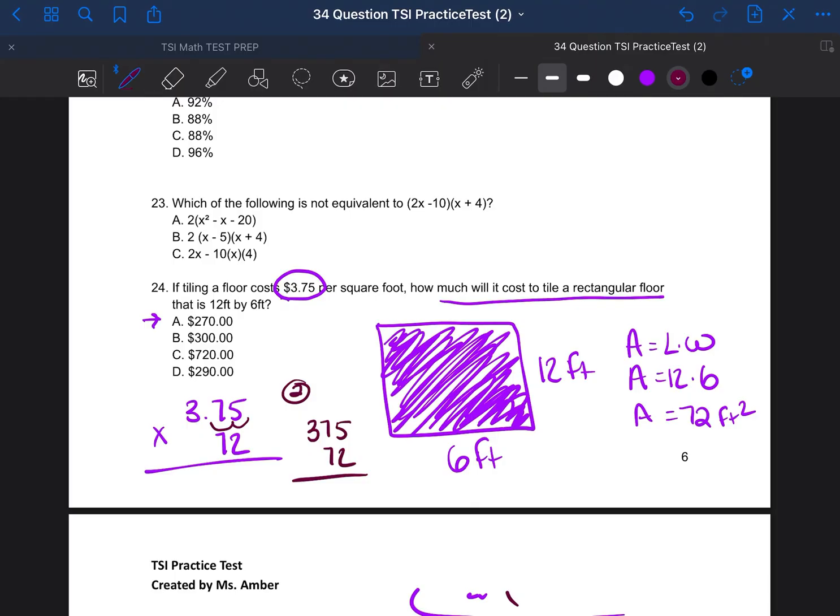So 5 times 2 is 10. Carry the 1. 7 times 2 is 14. Plus 1 is 15. Bring down the 5. Carry the 1. 3 times 2 is 6. Plus 1 is 7. Cross off the 2. Bring down the 0. 5 times 7 is 35. The 5 goes down. The 3 goes on top. 7 times 7 is 49. 49 plus 3 is 52. So you bring down the 2. Bring up the 5. And then 3 times 7 is 21. 21 plus 5 is 26.